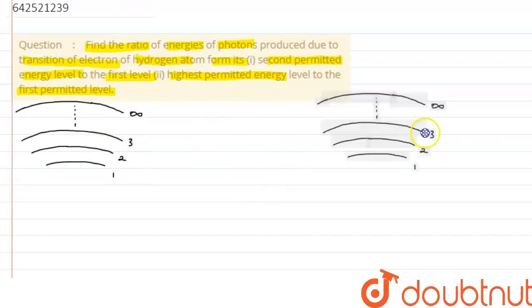We have shown some orbits over here, that is 1, 2, 3 and up to infinity. In the first case, the electron is jumping from 2nd to 1st. That is, transition is taking from 2 to 1. And in the last, it says highest permitted energy to the 1st. Highest permitted energy will be emitted when the electron jumps from infinity to the 1st.